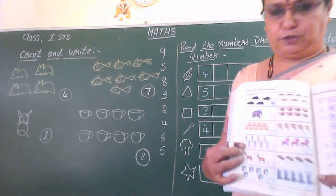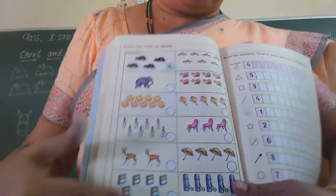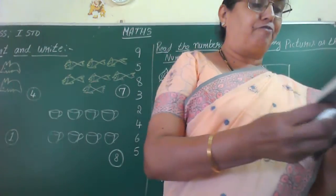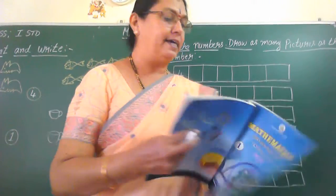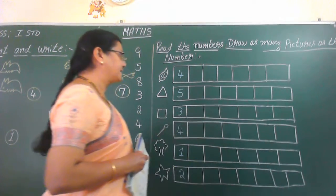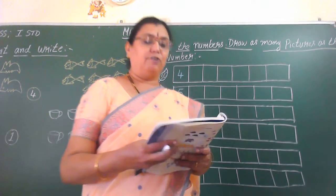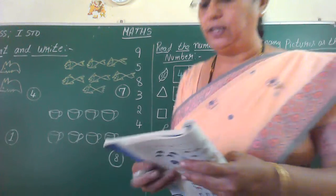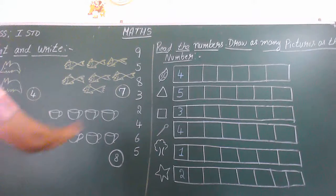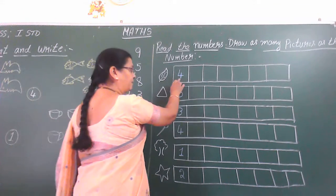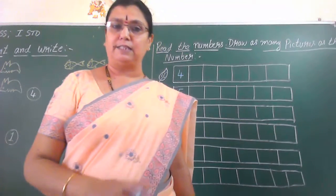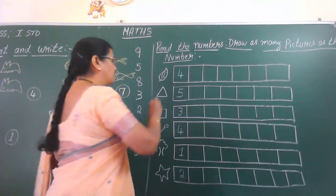Do this in your textbook. Now we will go to page number 55. Read the numbers and draw as many pictures as the numbers they have given. First one, they have given leaf. One leaf they have drawn and given number four. So what we have to do now? We have to draw four leaves in this box.